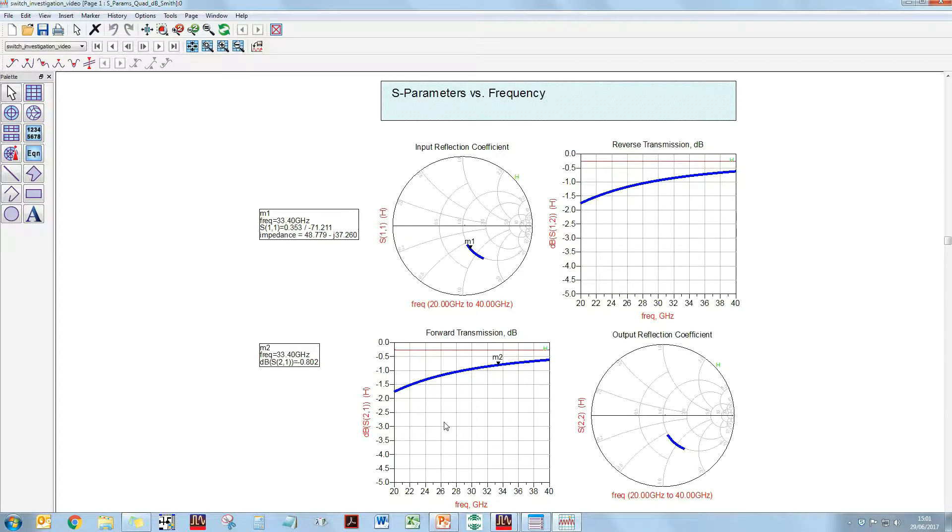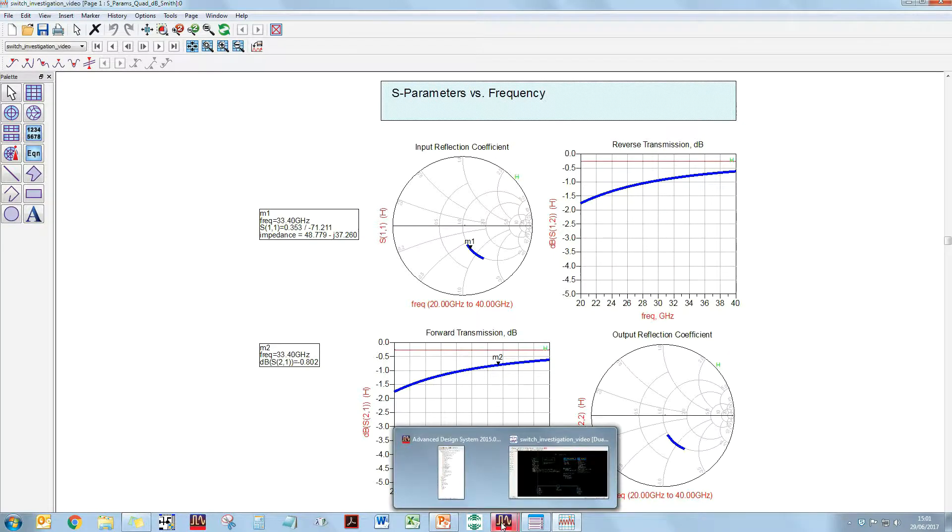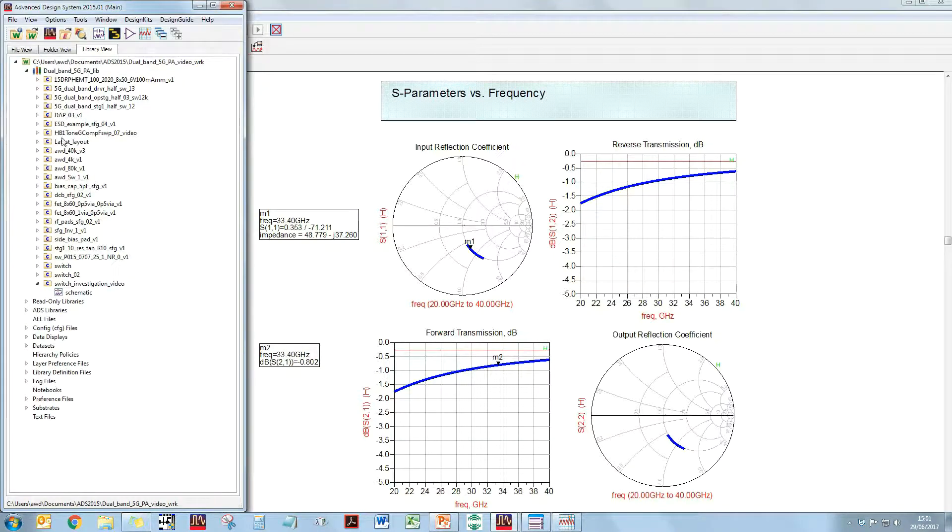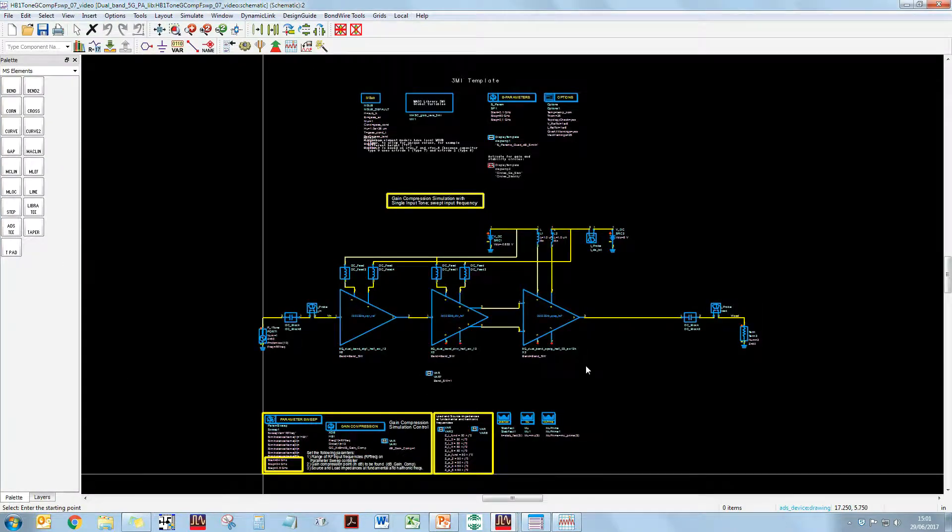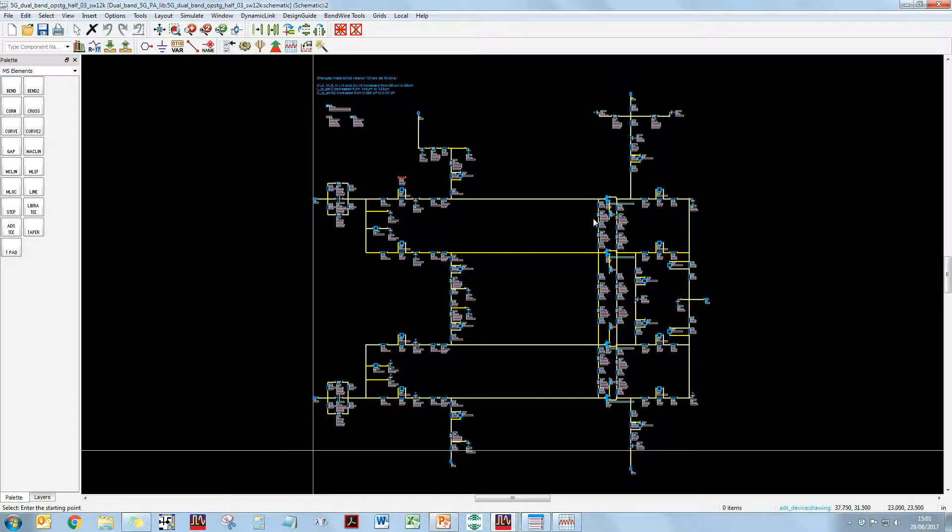So, let's see how I've implemented these switches in the dual band power amplifier. Here is a schematic of my dual band power amplifier. The output stage is here, the driver stage is here, and the input stage is here. So, I went for a three-stage design. If we look inside the output stage, we can see that I've implemented one, two, three, four devices in parallel, and this is the technique we use at millimetre wave to get both the gain and the power.